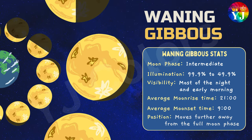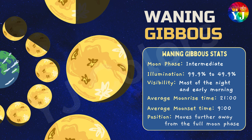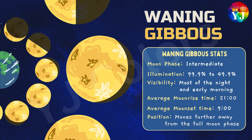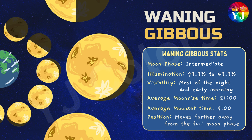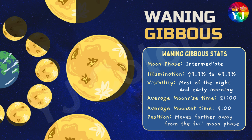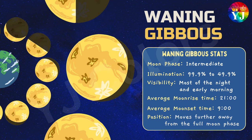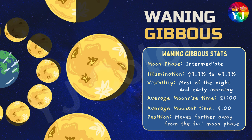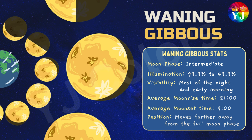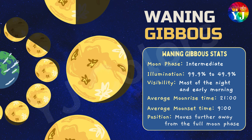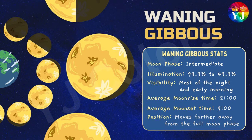Waning Gibbous: Moon Phase — Intermediate; Illumination — 99.9% to 49.9%; Visibility — most of the night and early morning; Average Moonrise and Moonset Time — 9 p.m. to 9 a.m.; Position — moves further away from the full moon phase.